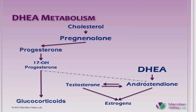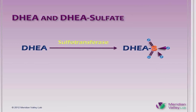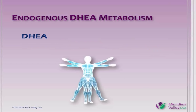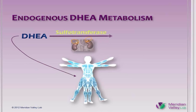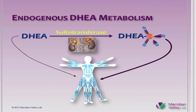DHEA sulfate is a metabolite of DHEA produced by adding a sulfate group. This conversion is reversibly catalyzed by the sulfotransferase enzymes. Normal internal biosynthesis of DHEA introduces a fair amount of it into the bloodstream unsulfonated. It's distributed to every cell in the body where further metabolism takes place. Endogenous DHEA is sulfonated primarily in the zona reticularis of the adrenal cortex. Even though there's a significant amount of unsulfonated DHEA released into circulation, DHEA sulfate levels are about 300 times higher than those of free DHEA.